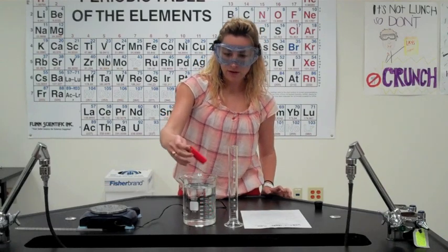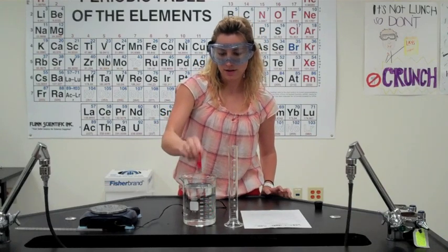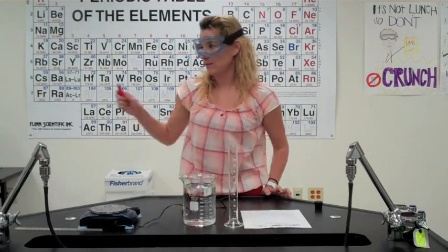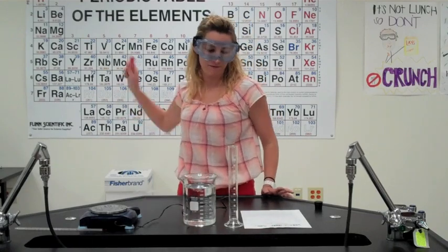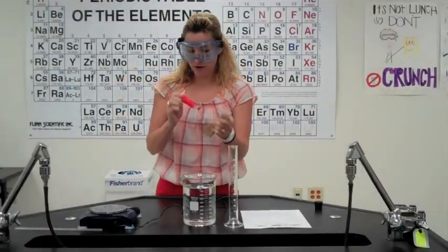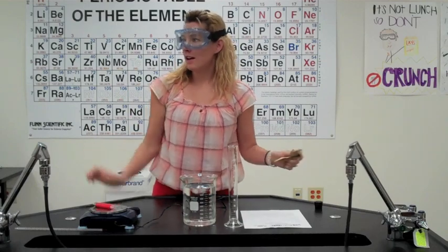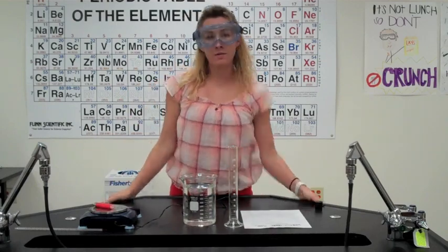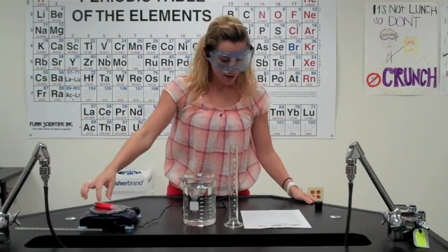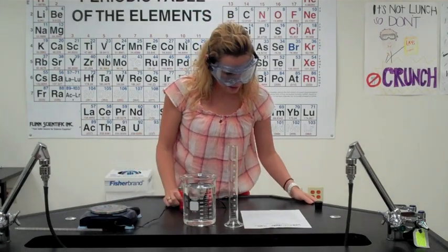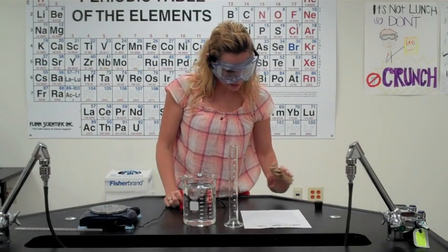Now we're going to take this out, dry it off as much as we can, and we are going to find the mass of our butane lighter. Our initial mass is going to be 21.84 grams. At this point, we are now ready to go on to the next part.